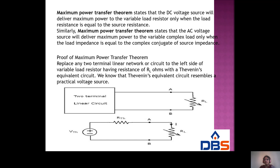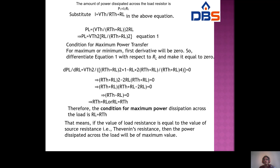Substituting into the power equation: PL = IL² × RL = (Vth / (Rth + RL))² × RL. Therefore PL = Vth² × RL / (Rth + RL)². This is equation 1.